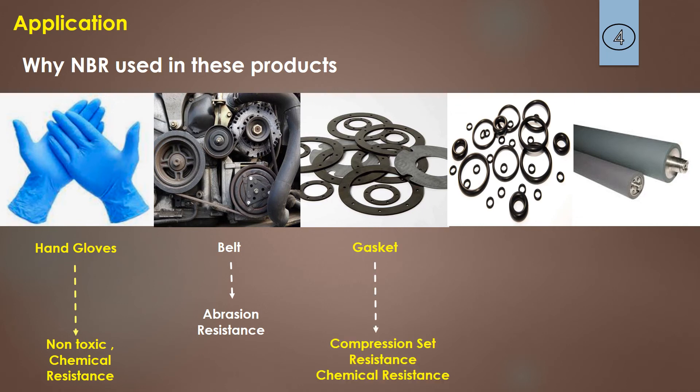For gaskets, NBR is used due to its high compression set and resistance to chemicals. For O-rings, it is used because of its high resistance to oil. For rollers, NBR is used due to its chemical resistance capability — particularly rollers used in the paint process.